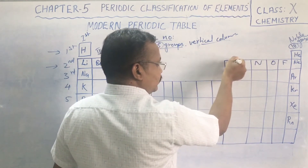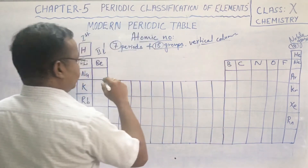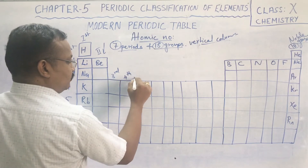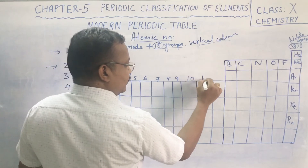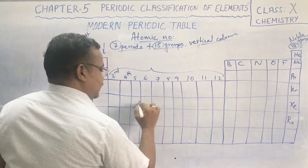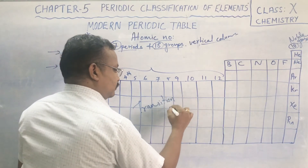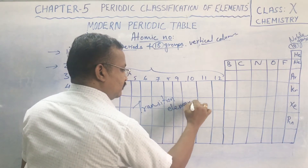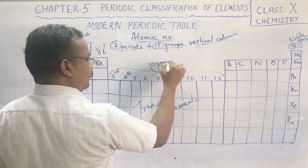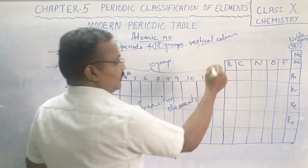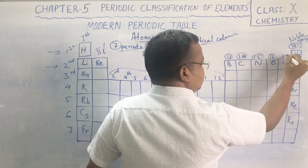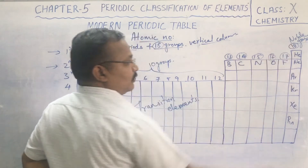After the 18th group, we have the 17th, 16th, 15th, 14th, and 13th groups. In between, from group 3 through group 12, we have 10 groups which are called transition elements. The detailed study of transition elements comes in higher classes. The first, second, and groups 13 through 17, along with group 18, are called representative elements.